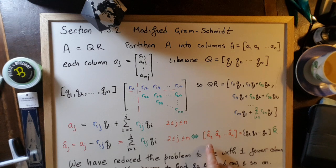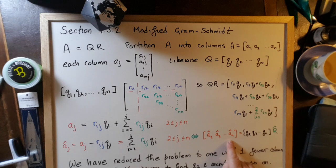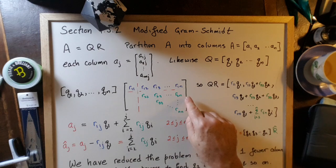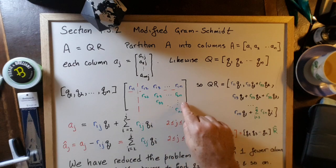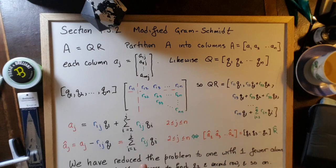So that means that we have N minus 1 equations. These N minus 1 columns are equal to Q2, Q3, etc., times R hat, where R hat is just the green part of this matrix.